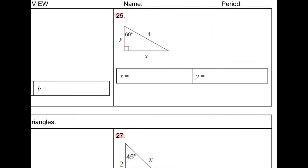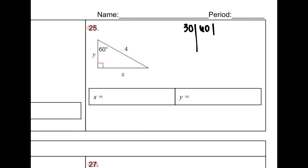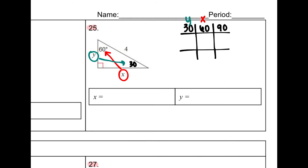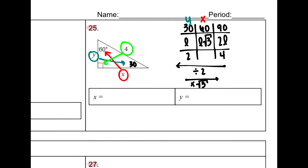The last problem of this type is number 25. I set up my table: 30, 60, 90; middle row L, L root 3, 2L. X is across from the 60 and Y is across from the 30. We're given 4 across from the 90. Going from 90 to 30 — dividing by 2 — gives me 2 for L. Going from 30 to 60 — multiplying by root 3 — gives 2 root 3. So Y equals 2 and X equals 2 root 3.